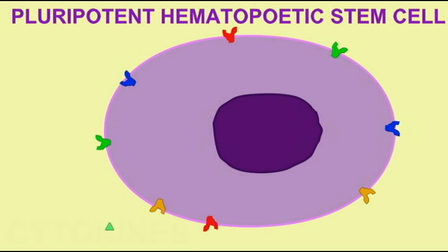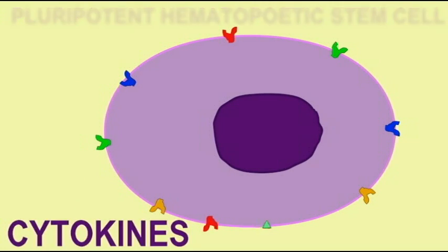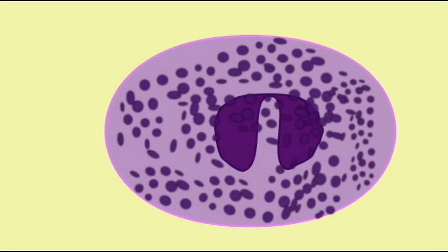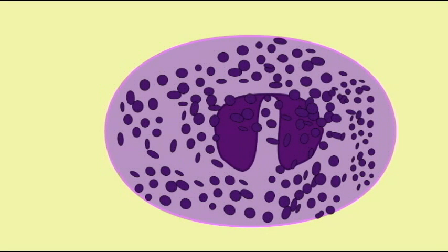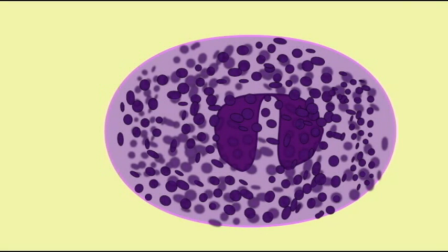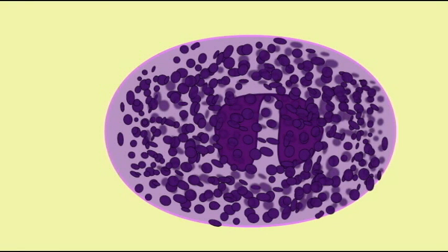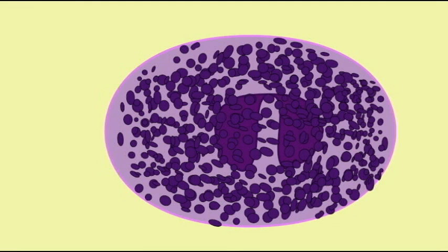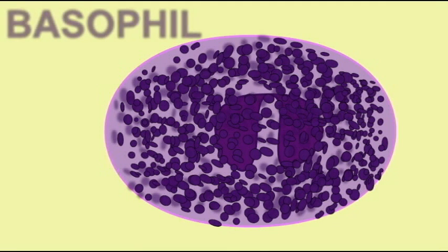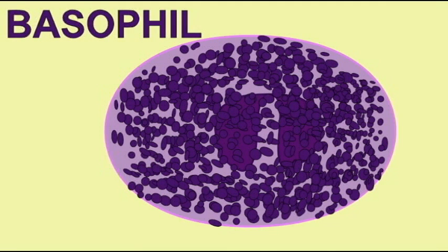Basophils are white blood cells which also develop from cytokine stimulation of the stem cells of the bone marrow. They can form a bilobed nucleus, but this nucleus typically is not visible because of the presence of large, dark purple staining lysosomes or granules, which will mediate the inflammatory response. So these white blood cells help to mediate inflammation, the basophils.